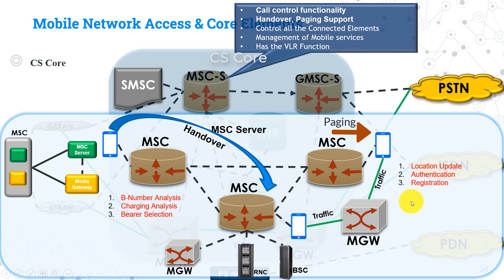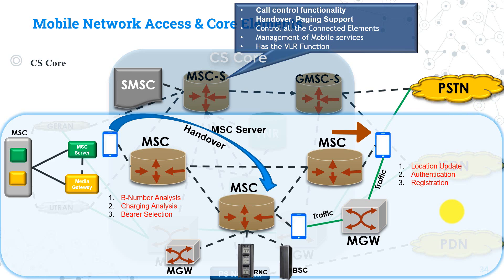MSC Server handles mobility management in case of location updates, the authentication process between the user equipment and the HLR and authentication center, and the registration process of a user to the network. Finally, the MSC Server contains the VLR functionality — VLR stands for Visitor Location Register, an internal database inside the MSC Server where subscriber data and profile are stored, including subscriber identity, current location area, supplementary services assigned to the user, and the current activity of the mobile user.